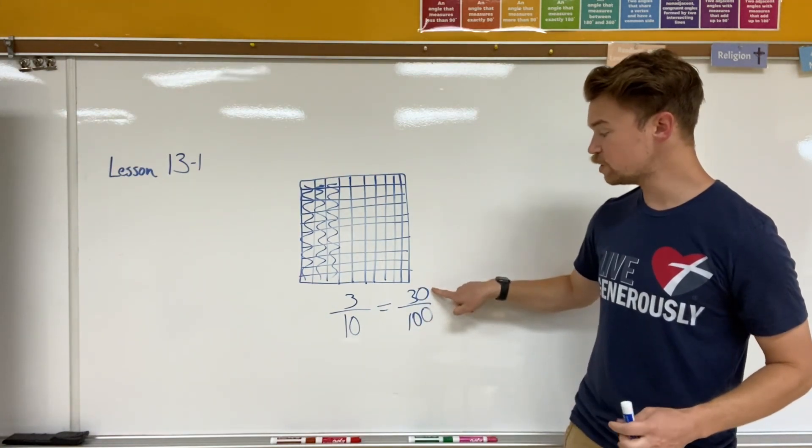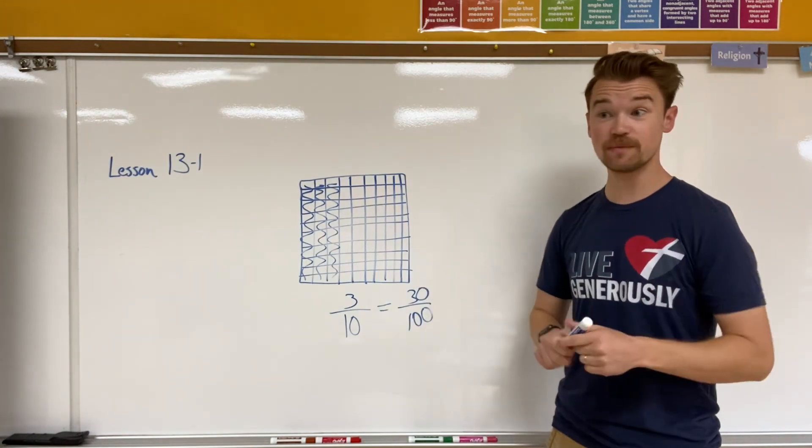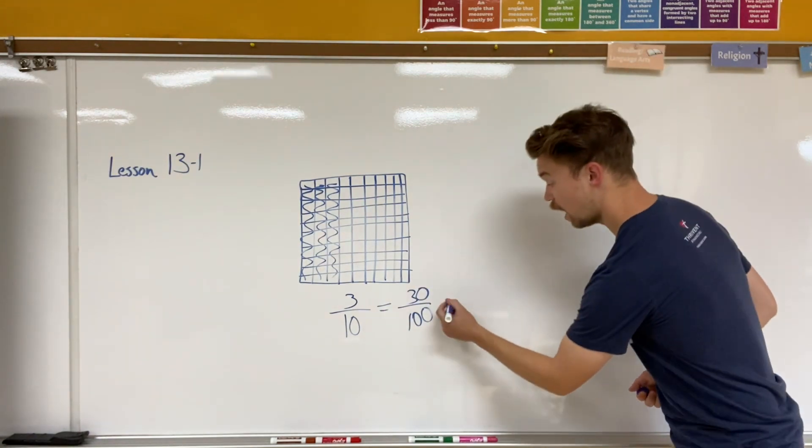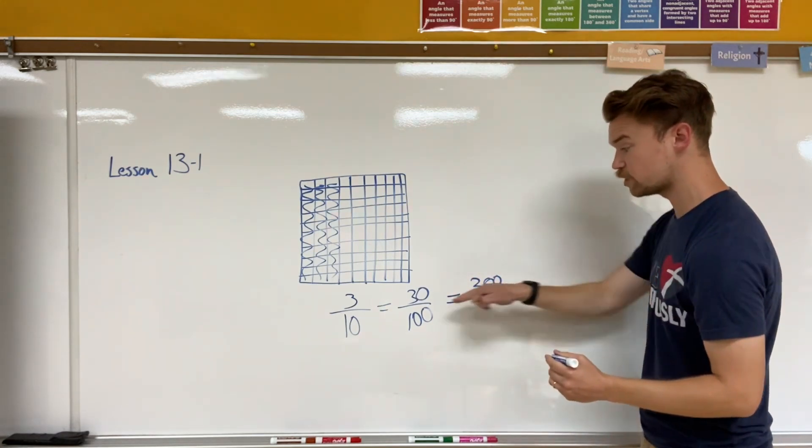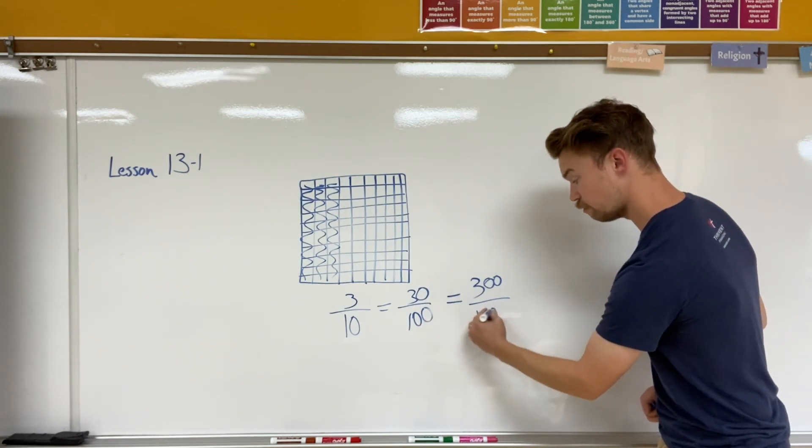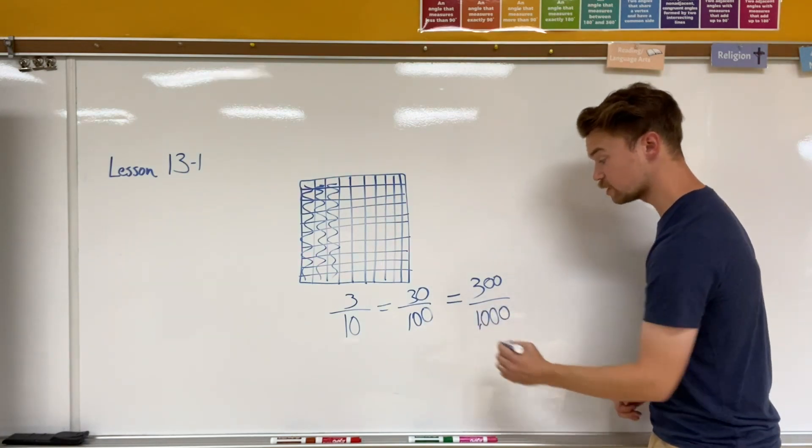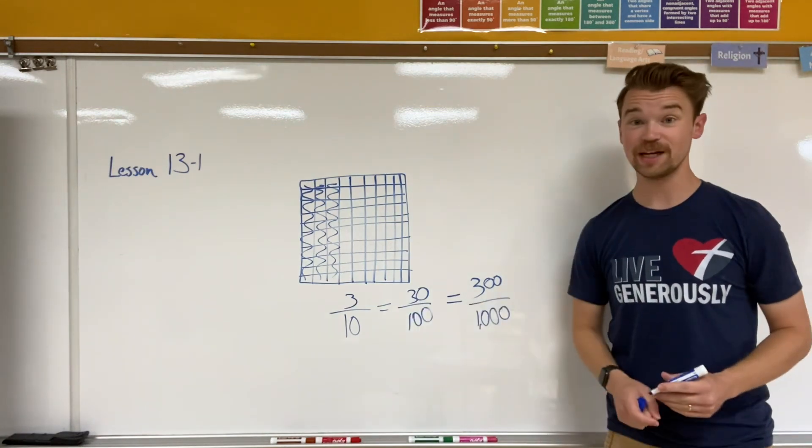Notice how I added one zero to my numerator and one zero to my denominator, which also means if we're going beyond that, I could also say that three hundredths—I added one more zero to thirty—is equal to, I'm going to add one more zero to my one hundred to equal one thousand. So three hundred thousandths is also equal to three tenths.